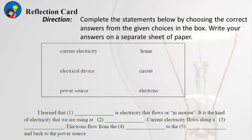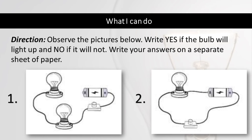Direction: Complete the statements below by choosing the correct answers from the given choices in the box. Choices: current electricity, home, electrical device, circuit, power source, electrons. (1) Blank is electricity that flows or is in motion — it is the kind of electricity that we are using at blank. (2) Current electricity flows along a blank. (3) Electrons flow from the blank to the blank and back to the power source. Direction: Observe the pictures below — write 'Yes' if the bulb will light up and 'No' if it will not. Write your answers on a separate sheet of paper.